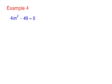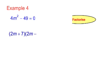Here's another example: 4m² minus 49 equals 0. Notice that this is the difference of a perfect square. In other words, it becomes 2m plus 7, 2m minus 7 equals 0.